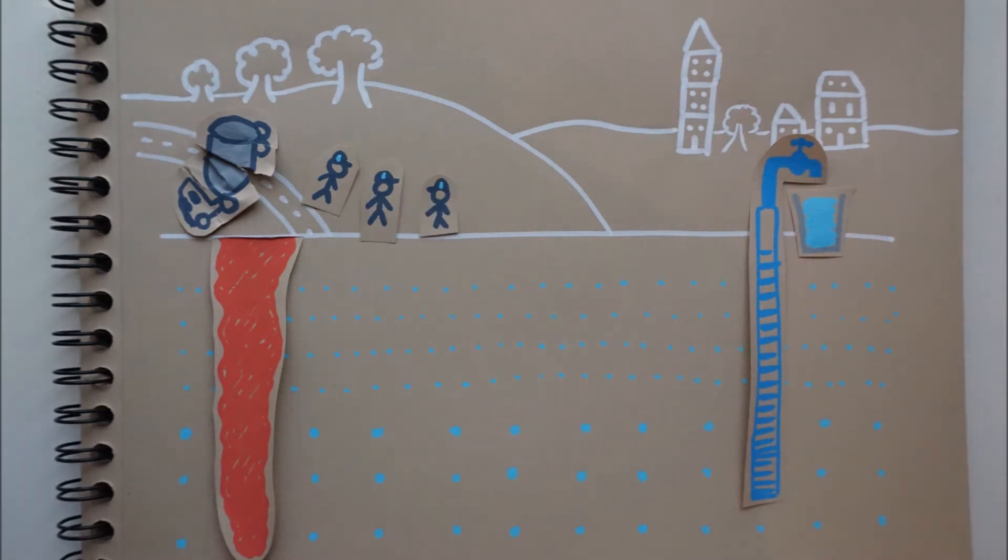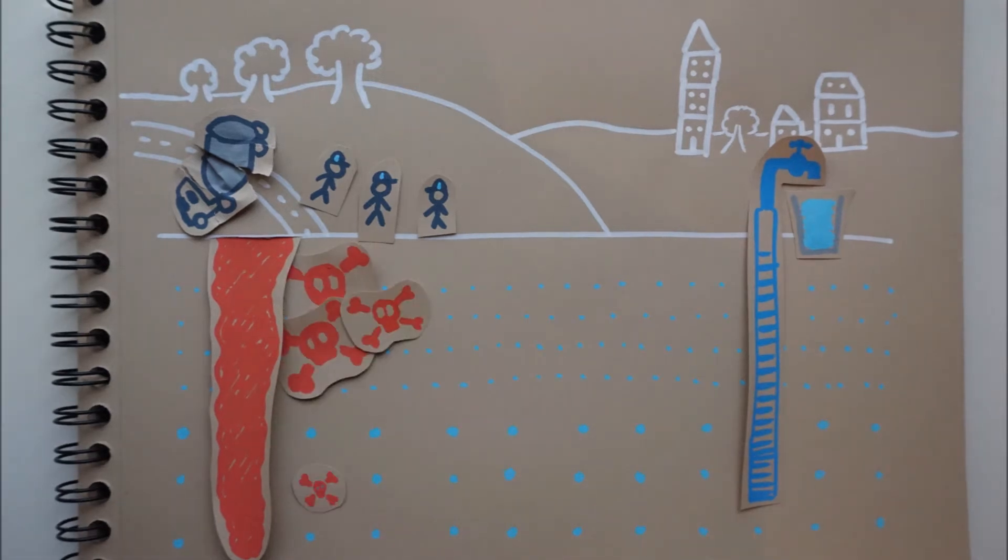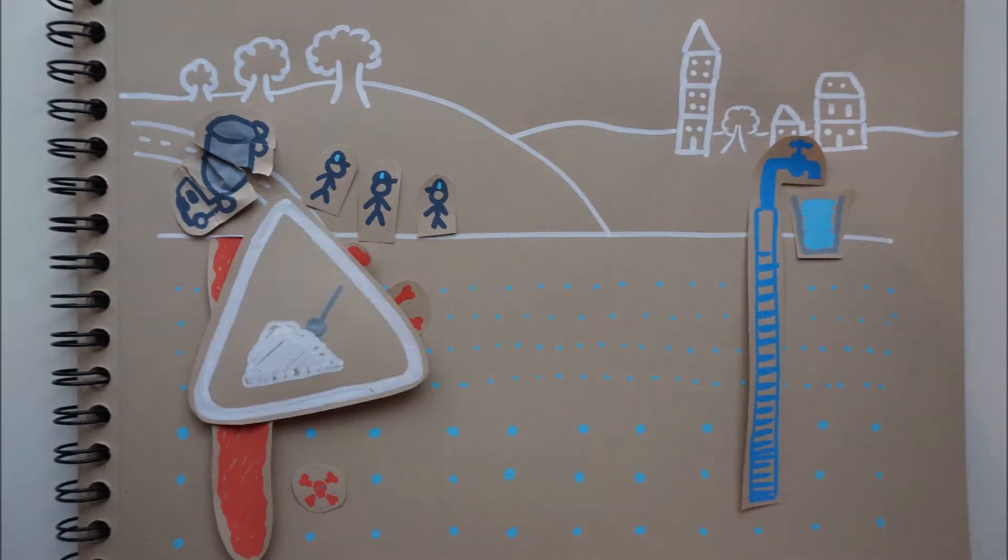Experts quickly discovered that two distinct layers of the aquifer had been polluted: the upper one with a lot of pollutants and the lower one with less. Using traditional methods, the experts recommended the remediation of only the upper, most polluted layer.